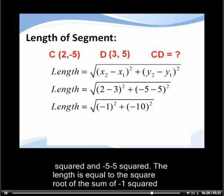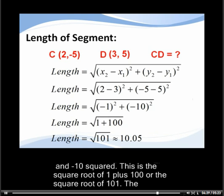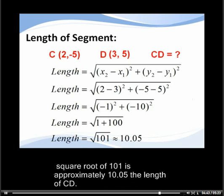This length is equal to the square root of the sum of (-1)² and (-10)². This is the square root of 1 plus 100 or the square root of 101. The square root of 101 is approximately 10.05, the length of CD.